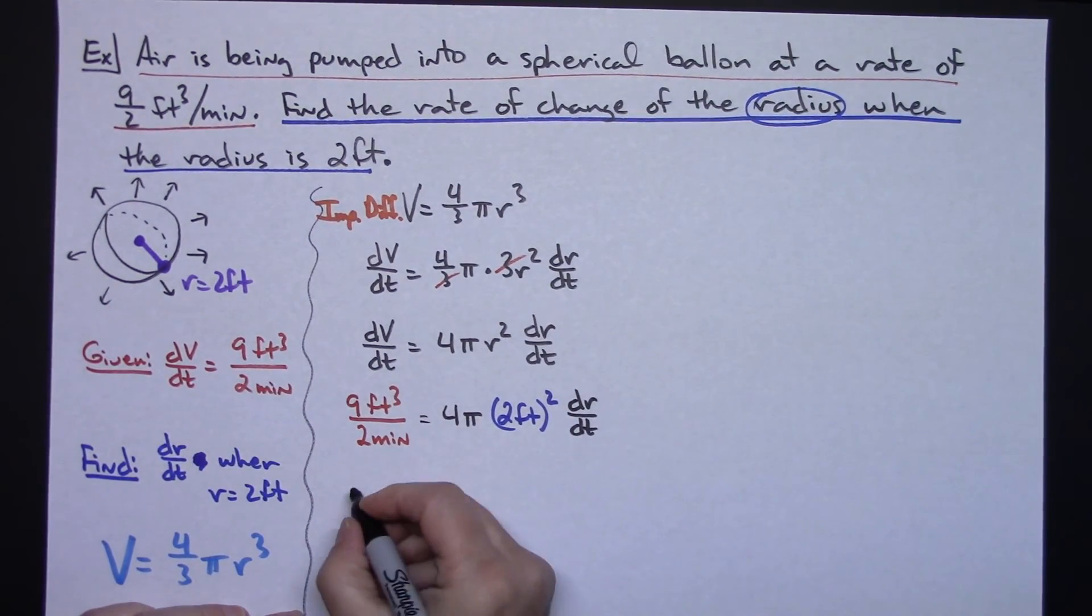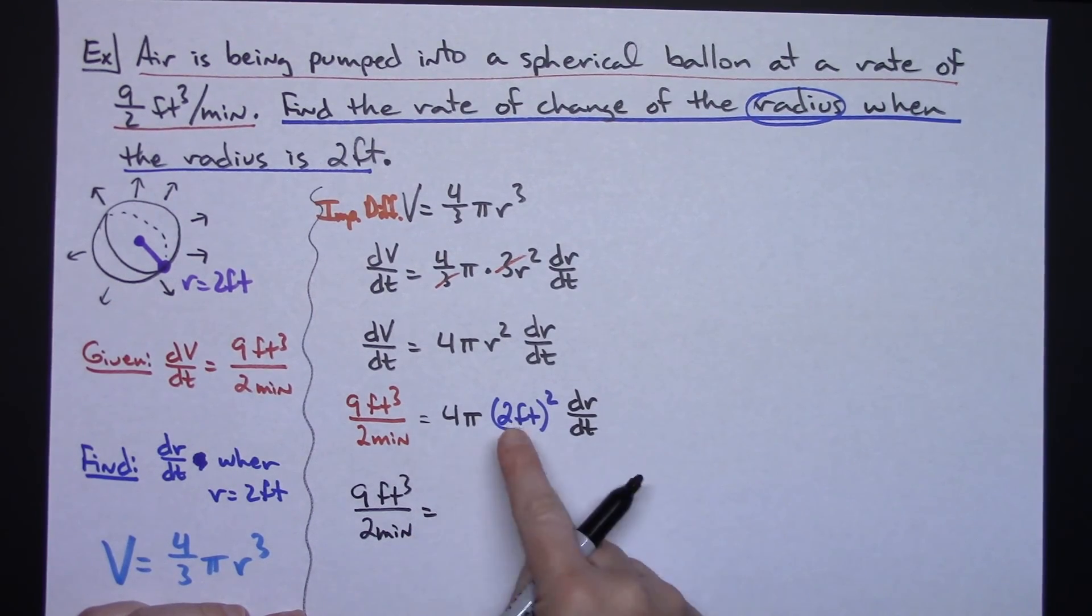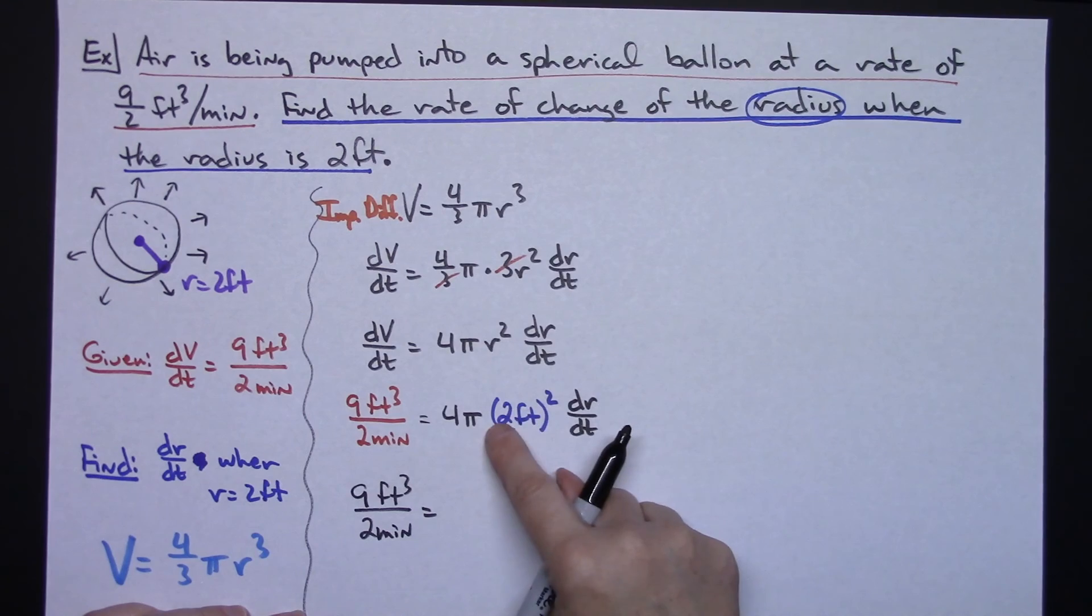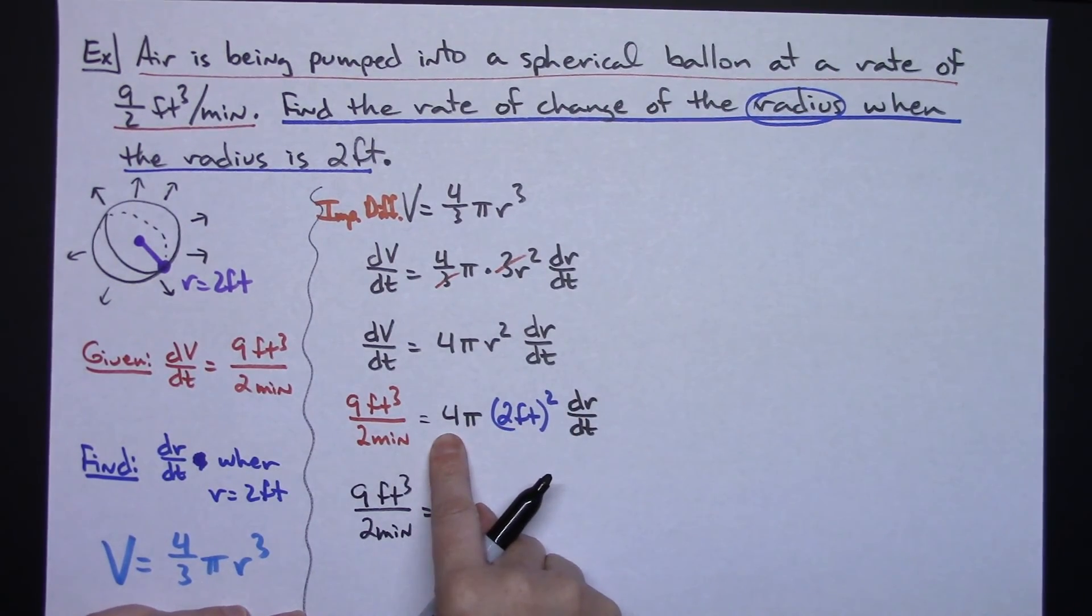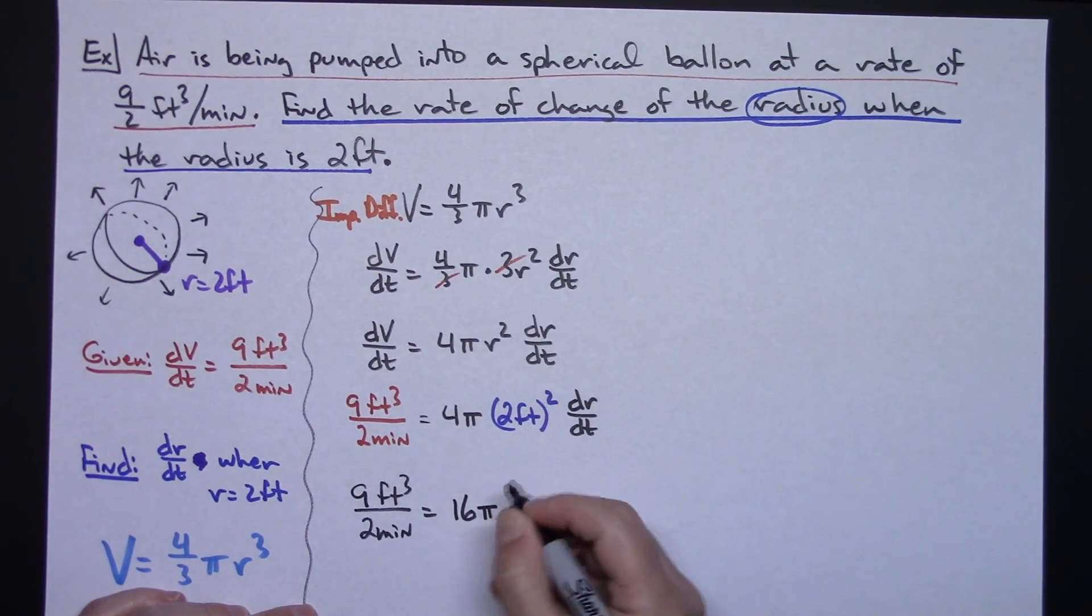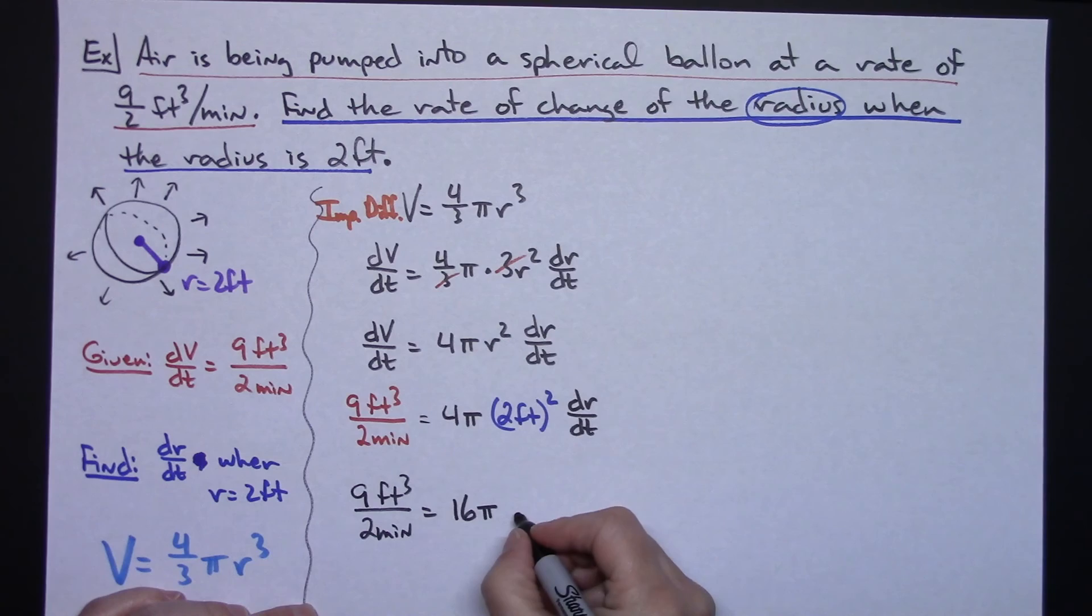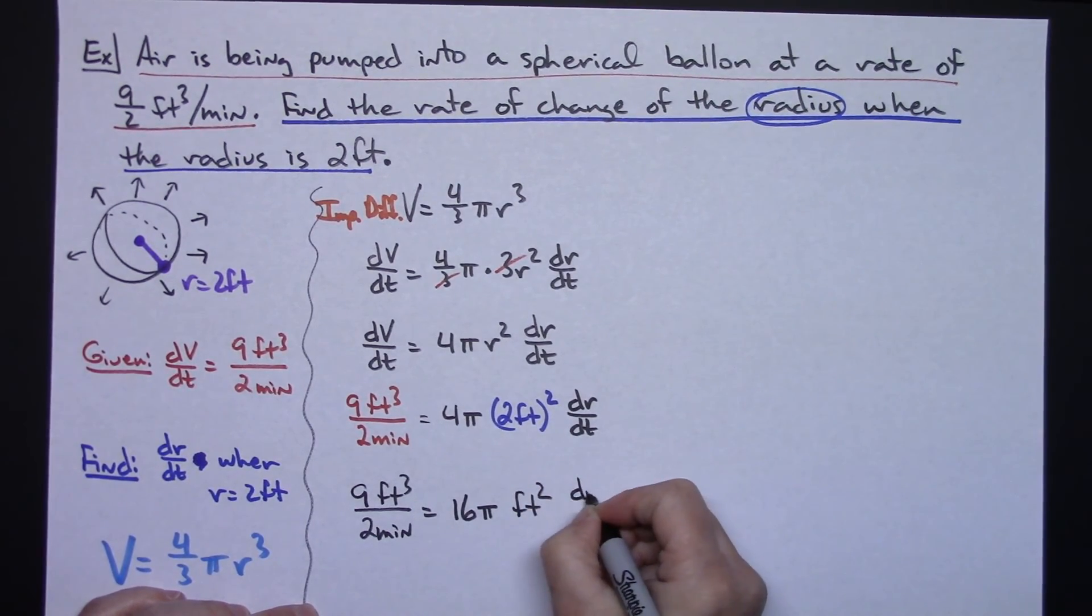I'm not going to do anything with this over here, so we're just going to carry that down: 9 feet cubed over 2 minutes. Now we're going to do some simplifying here. 2 squared is 4 times this 4 out here is going to be 16, so I'm going to have a 16π. Now this feet is also squared, so this is going to be feet squared. And then dr/dt.